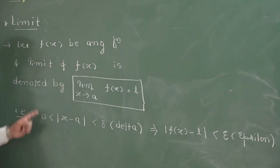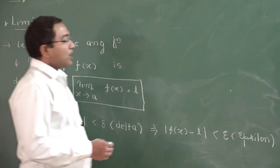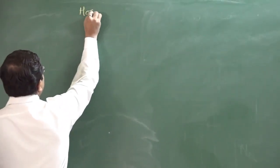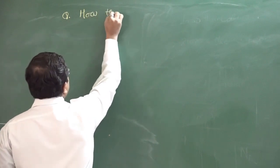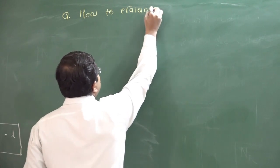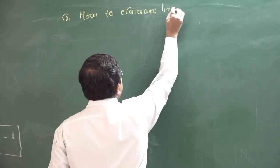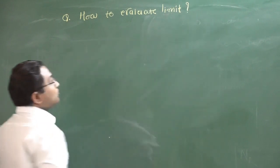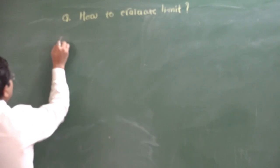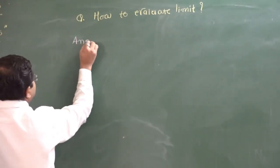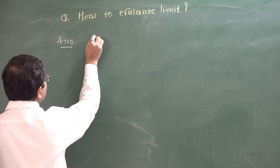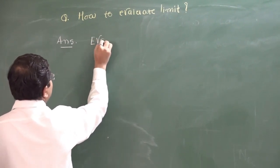So that is the definition of limit. Now the next question is: how do we evaluate the limit? Let us look at the evaluation method.